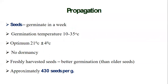Propagation: This is an annual plant propagated through seeds. The seeds germinate in a week. Germination temperature 10 to 35 degree centigrade; optimum 21 degree centigrade. No dormancy. Freshly harvested seeds give better germination than older seeds. Fresh seeds have more germination percentage. Approximately 430 seeds are in 1 gram.